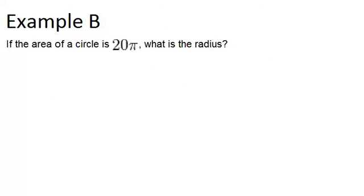Example B: if the area of a circle is 20 pi, what is the radius? Okay, so the area of a circle is pi r squared. If we know that the area is 20 pi, we can substitute that in for A.